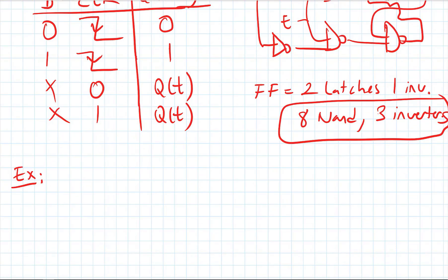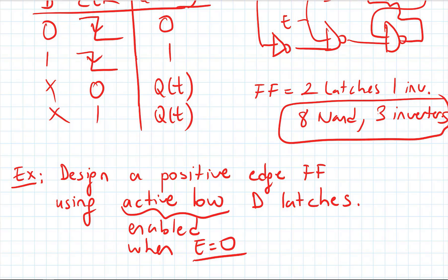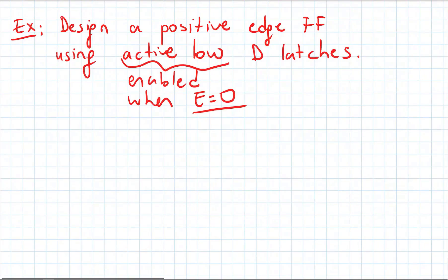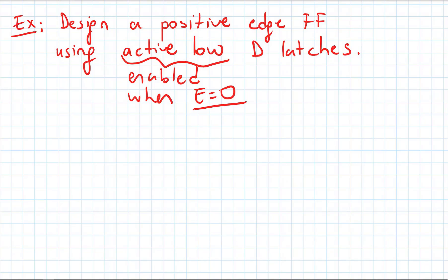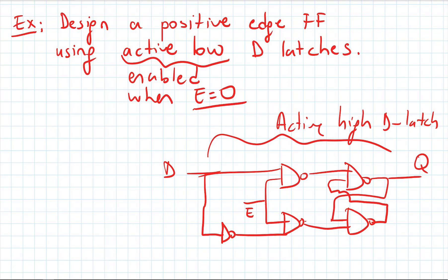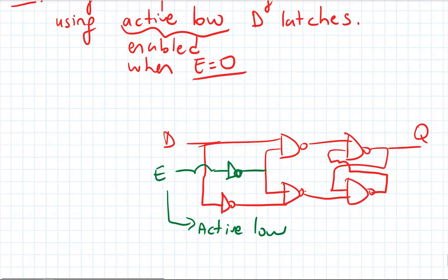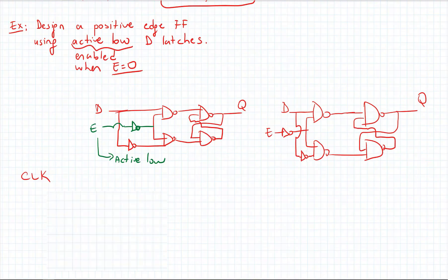Now let's do an example: design a positive edge triggered flip flop using active-low D latches. An active-low latch is enabled when its enable signal is zero. Starting from an active-high D latch, we can make it active-low by placing an inverter on the enable input. Using this approach, we now have an active-low D latch to work with, and we will use two of them.